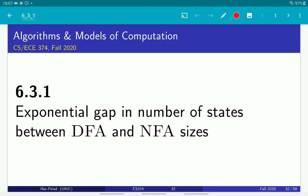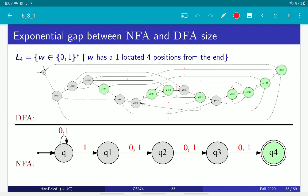Okay, so now once we have fooling sets and we know what they mean, we can argue that there is an exponential gap between NFAs and DFAs in their size in some cases.